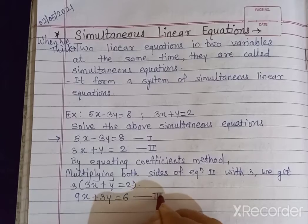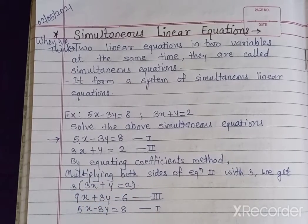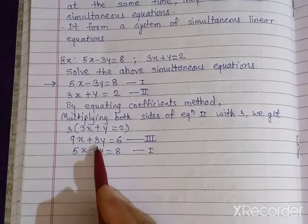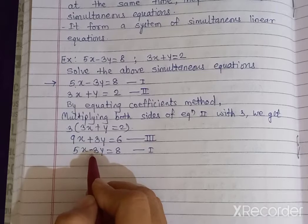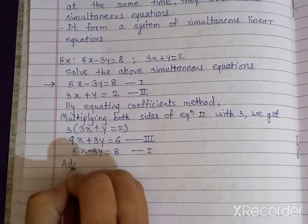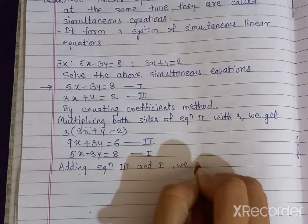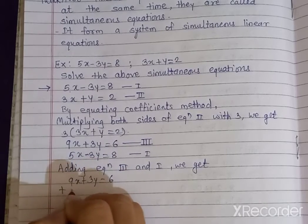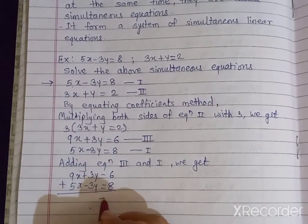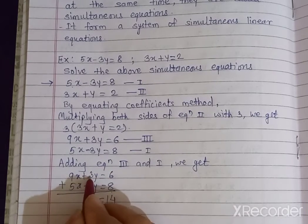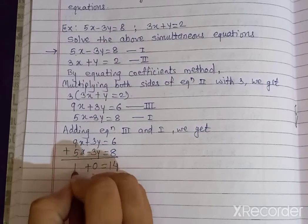This modified second equation is now the third equation, and the first equation remains as 5x minus 3y is equal to 8. In these two equations the coefficients of y are the same, but their signs are different — plus and minus. So we can add these two equations, making the 3y terms cancel to 0. Adding equation 3 and equation 1: 9x plus 3y equals 6 plus 5x minus 3y equals 8. Here 6 plus 8 is 14, and 3y minus 3y is 0, and 9x plus 5x is 14x.